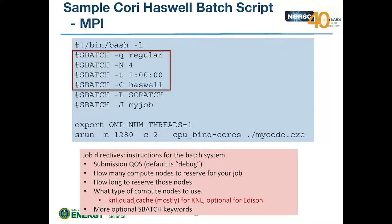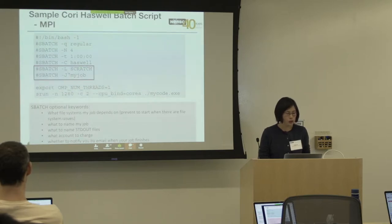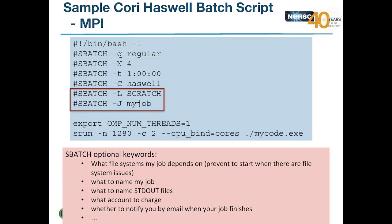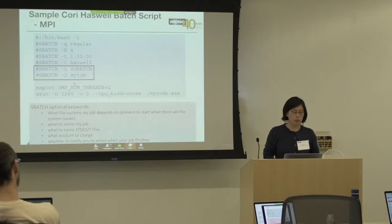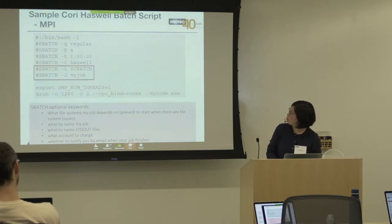There are several things to specify in your script. You choose a QoS — debug by default, but most users use 'regular' for longer or larger jobs. You specify how many nodes you want, how long you want to run, and what type of node. On Cori, you'd say '-C haswell' or '-C knl,quad,cache'. There are optional flags: which filesystem your job depends on (so jobs are held rather than launched and failing when there are known filesystem issues), job name, account, email notifications on start or finish, and so on.